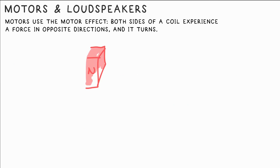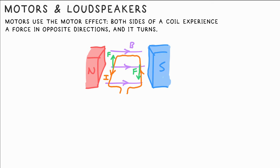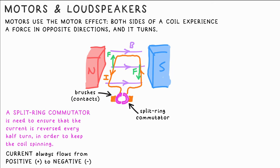Electric motors employ the motor effect by using a coil of wire that experiences opposite forces on both sides causing it to turn. However the current must be reversed every half a turn otherwise it would just stop, so we have what we call a split ring commutator to reverse the current every half a turn.